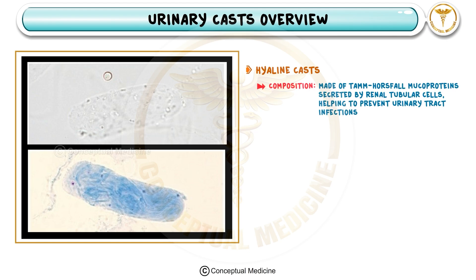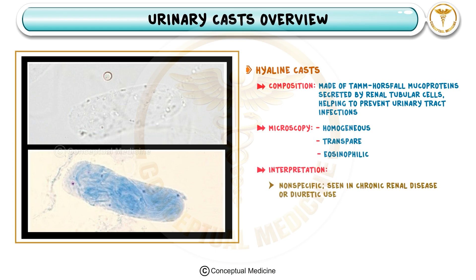Let's start with hyaline casts, the simplest and most common type. These are made purely of Tamm-Horsfall protein without any cellular inclusions. Under the microscope they appear homogeneous, transparent, and slightly eosinophilic. They are non-specific and can appear in conditions such as chronic kidney disease, or even in healthy individuals during dehydration or after strenuous exercise. Their presence alone doesn't confirm serious pathology but provides context alongside clinical symptoms.